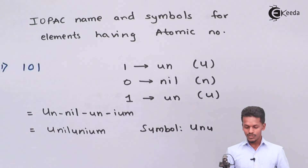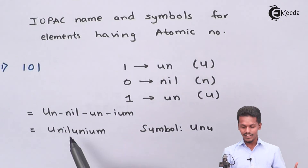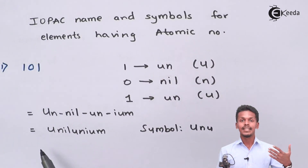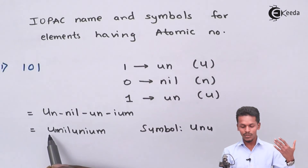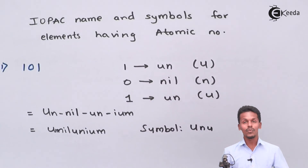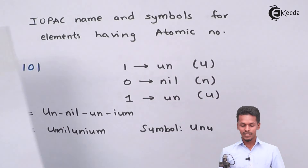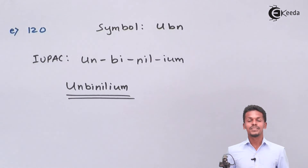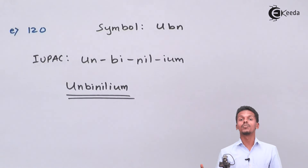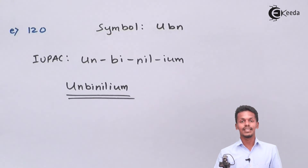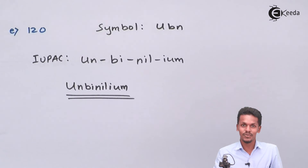To recap: for atomic number 101, the IUPAC name is 'Unnilunium'. This is how we represent the IUPAC name for elements with atomic number more than 100. It is very simple to do. Thank you for watching this video. I hope you have understood. You can now easily give the IUPAC name for any element with atomic number more than 100. Please share this video and subscribe to the channel. Thank you.